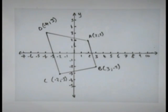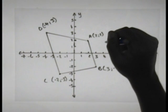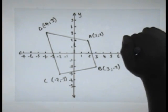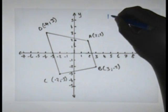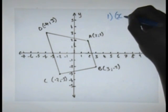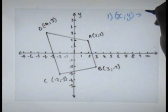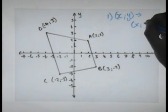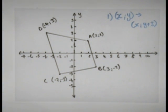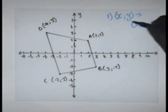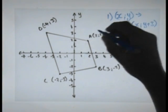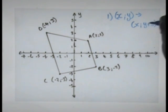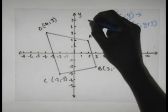Looking at this first example, ABCD is a shape given by points A(2, 2), B(3, -2), C(-2, -3), and D(-4, 3). The first transformation we're looking at is (x, y) → (x, y+3). This is a y shift — our shape is shifted 3 units up. Our new A is (2, 5). New B is (3, 1). New C is (-2, 0). New D is (-4, 6).